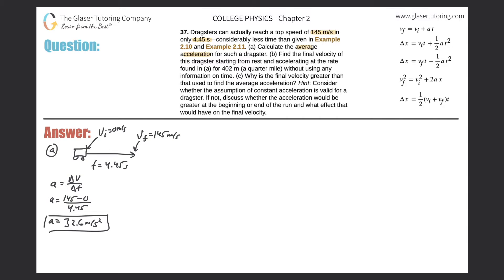Now Part B says: find the final velocity of this dragster starting from rest and accelerating at the rate found in Part A for 402 meters.